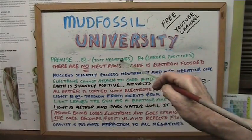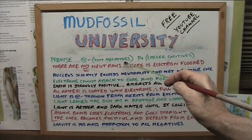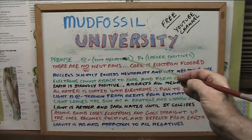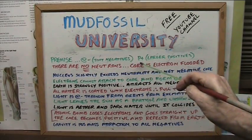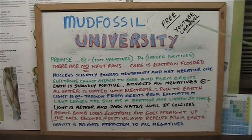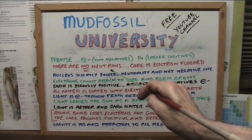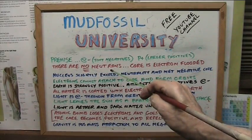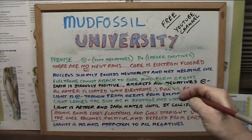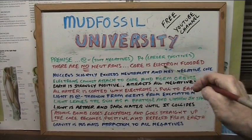Electrons are tiny little negative particles — most people accept that. They're very tiny, 1,800 times smaller than a proton. Protons are positive and much larger. There are no neutrons. The core is flooded with electrons.